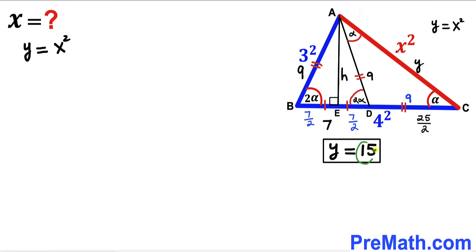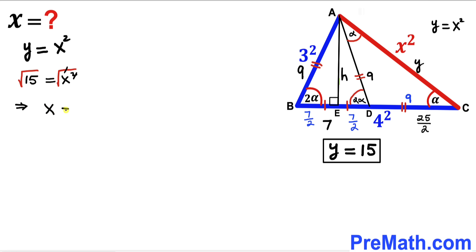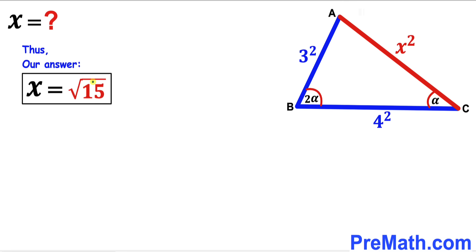We know that Y = x², and Y = 15. Substituting: x² = 15. Taking the square root on both sides, our x value turns out to be √15 units. So after all the calculations, x = √15 units — and that's our final answer. Thanks for watching and please don't forget to subscribe to my channel for more exciting videos.